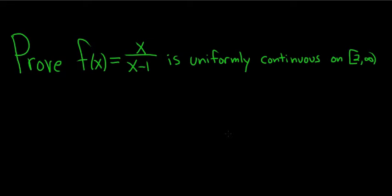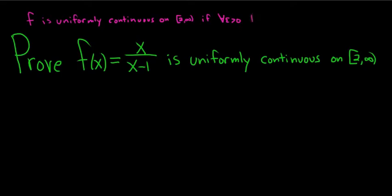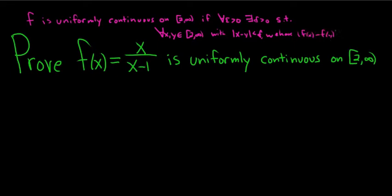Before we do the proof, let's recall what it means for a function to be uniformly continuous. We say a function f is uniformly continuous on the set 2 to infinity if for every epsilon greater than 0, we can find some delta greater than 0, such that for all x, y in the set 2 to infinity, with the distance between x and y being smaller than delta, we have the distance between f of x and f of y being smaller than epsilon.